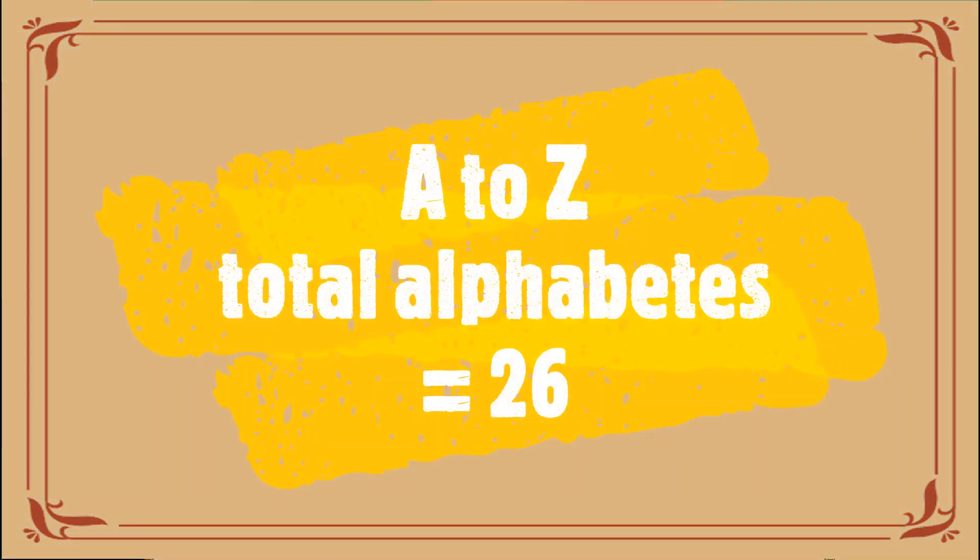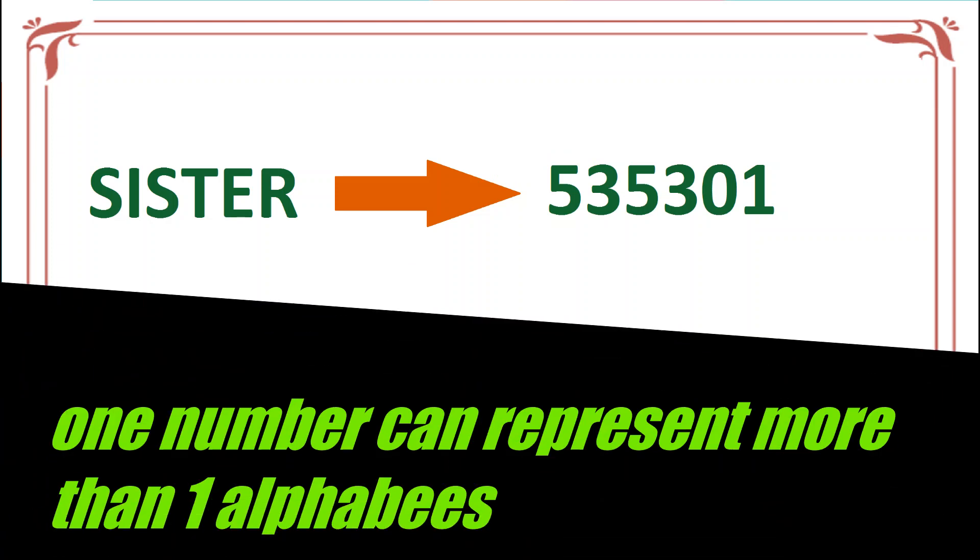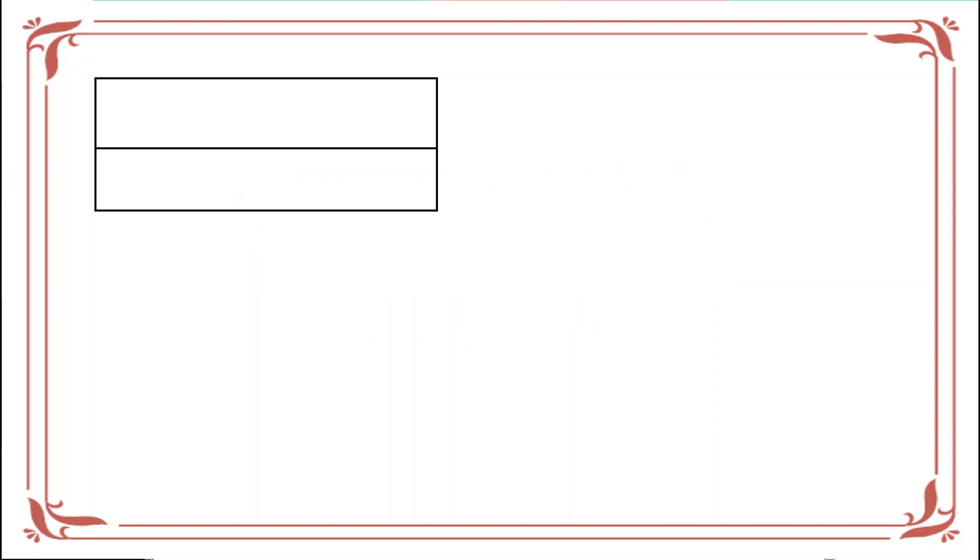So it can be that one number can be used for 2 or 3 letters. Like now, E uses 0 and R uses 1. I write this in a table: SISTER with assigned numerical values 5, 3, 5, 3, 0, 1.